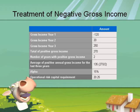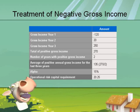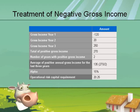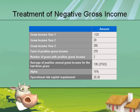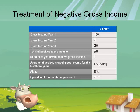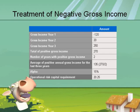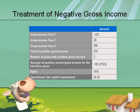The treatment of negative gross income: if a bank incurs a negative gross income in any of the previous three years, will it be taken into account under the basic indicator approach? Absolutely not. The rule states that it should be a three-year average of positive gross income. So if the gross income for any of the previous three years is negative or zero, the figure for that year will be excluded from both the numerator and the denominator when calculating the capital charge.